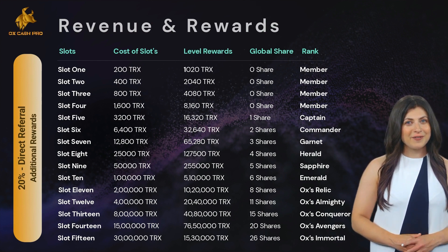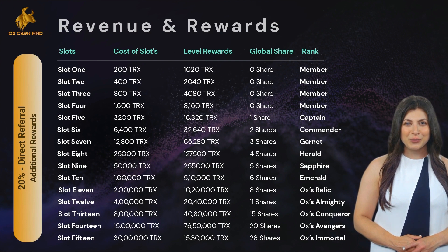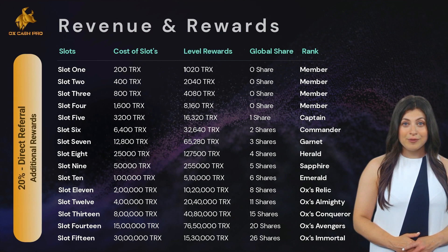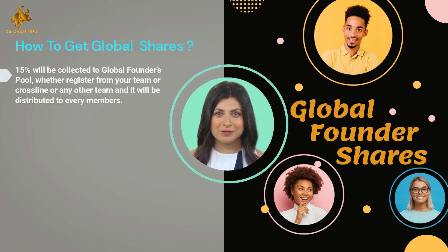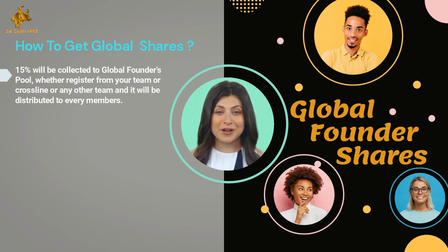Up to Slot 15, you accumulate 26 global founder shares as non-working earnings, plus all direct referral and level rewards repeatedly and unlimited times without additional investment. Now let's talk about global founder shares — otherwise called passive or non-working earnings. 15% is collected into the global founders pool. Whenever someone from anywhere in the world registers or upgrades with AuxCash Pro — whether from your team, crossline, or any other team — it is distributed to every shareholder according to their shares every month.